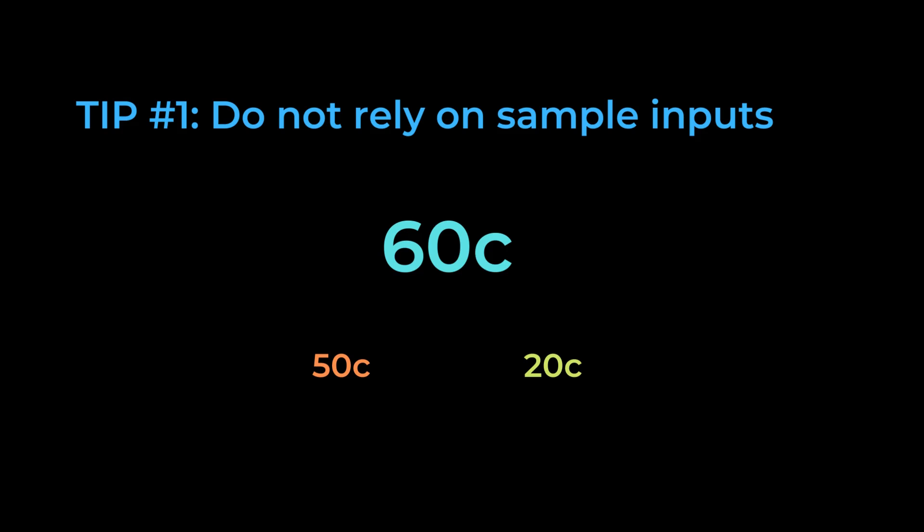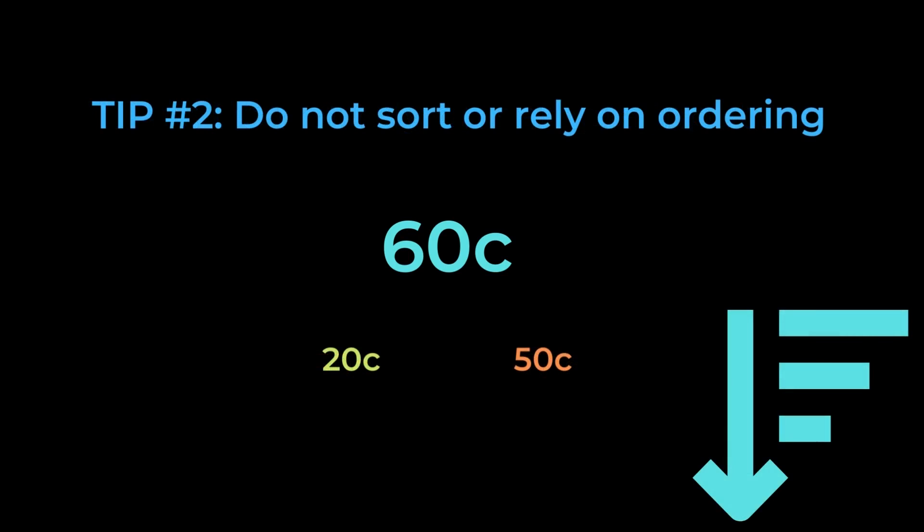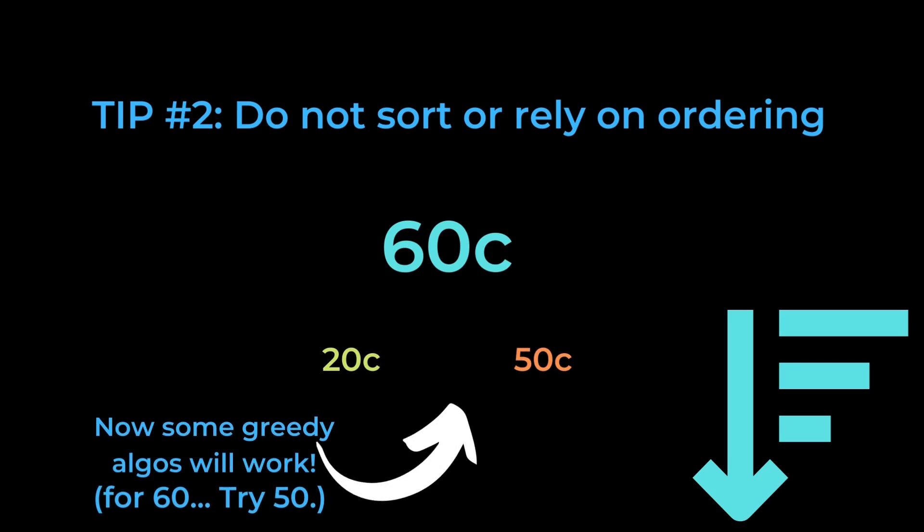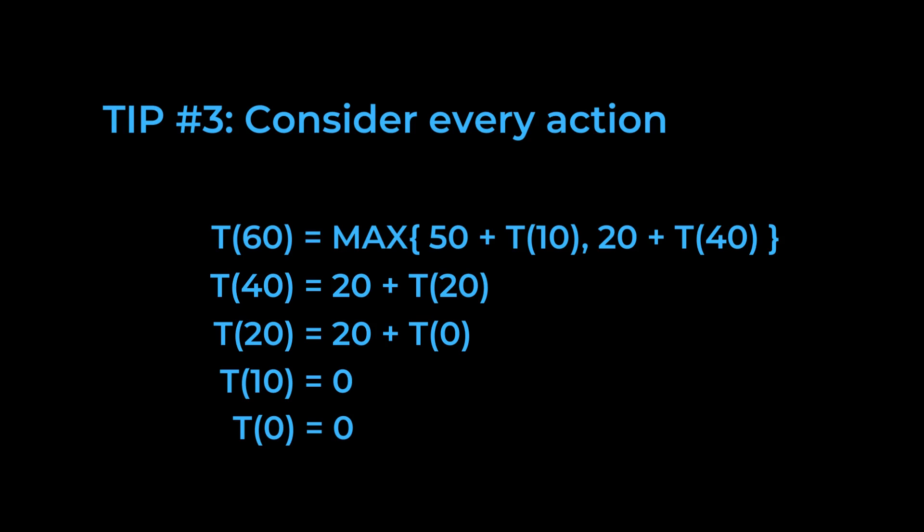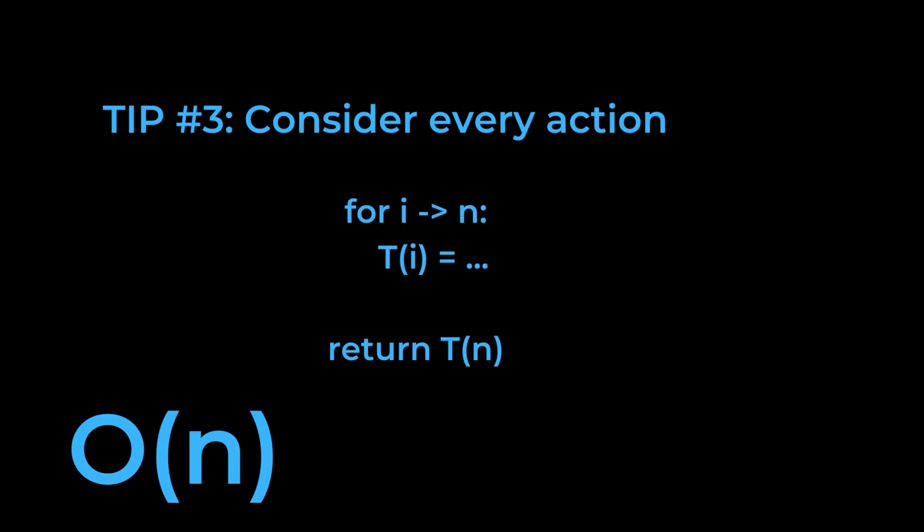Next, don't sort the inputs or worry about the ordering of inputs. If the order of the inputs matters, then it's a big red flag that your algorithm is probably greedy. Next, consider each action for a table entry and make sure that you're appropriately looking back in the table each time you're doing this. Short-circuiting of loops is another potential red flag that you might have a greedy algorithm.